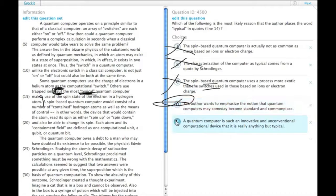E: a quantum computer is such an innovative and unconventional computational device that it is really anything but typical. So this is one of the normal uses of quotation marks in English, in American English. It's meant to signify that the word is not being used in its normal sense. Like I said, that's only one of the uses - quotation or defining a term are some of the other ones - but choice E is definitely one of them.